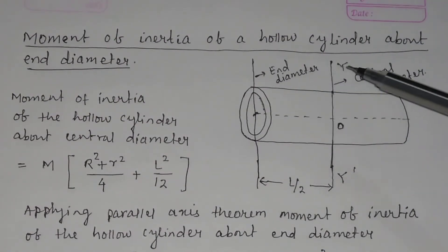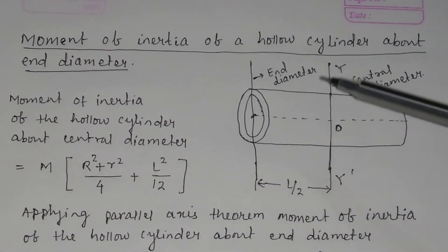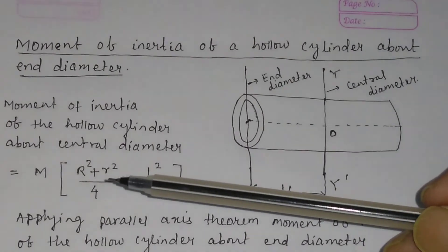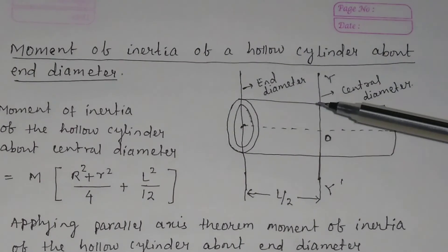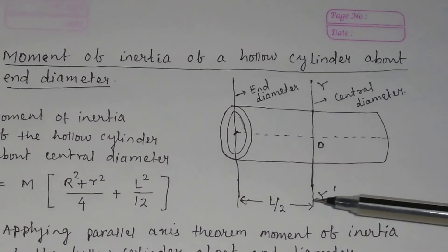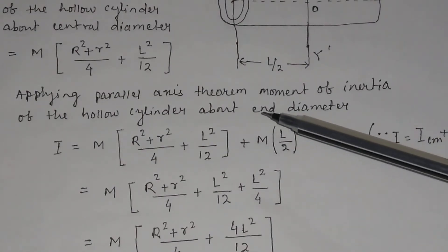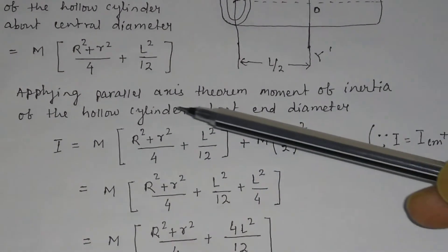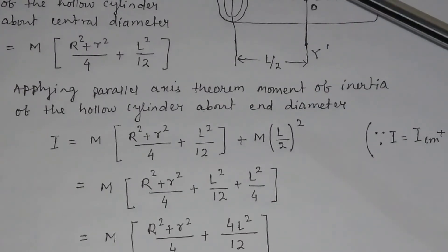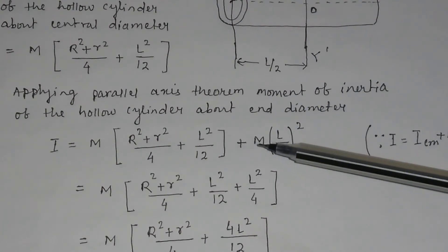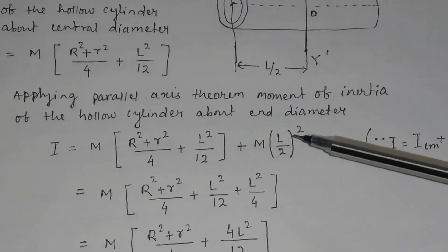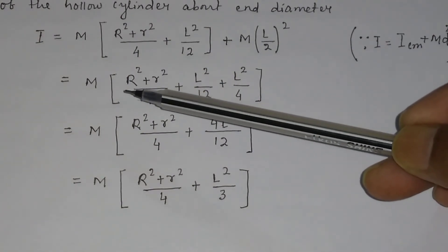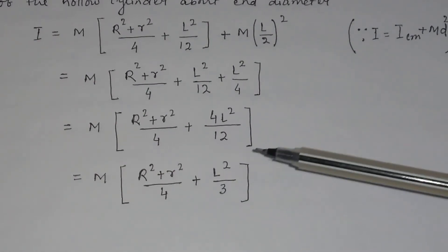Now let us find the moment of inertia of a hollow cylinder about an end diameter. We have calculated the moment of inertia about the central diameter as m(R² + r²)/4 + ml²/12. The central diameter and the end diameter are two parallel axes with distance l/2 between them. Using the parallel axis theorem, the moment of inertia about the end diameter equals the moment of inertia about the central diameter plus m(l/2)², which gives m(R² + r²)/4 + ml²/3.